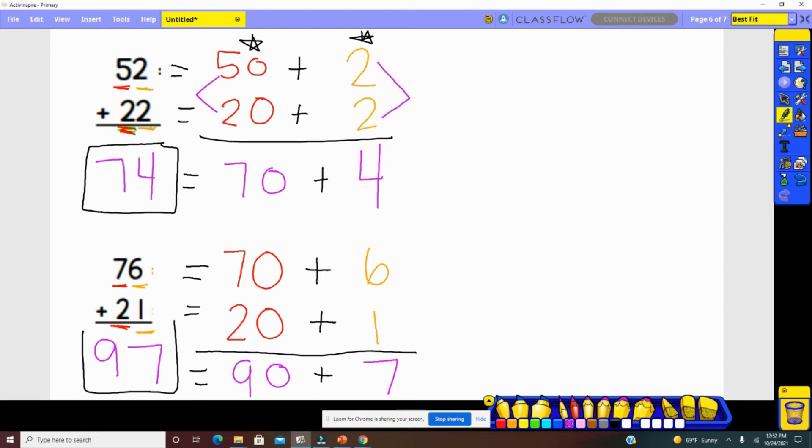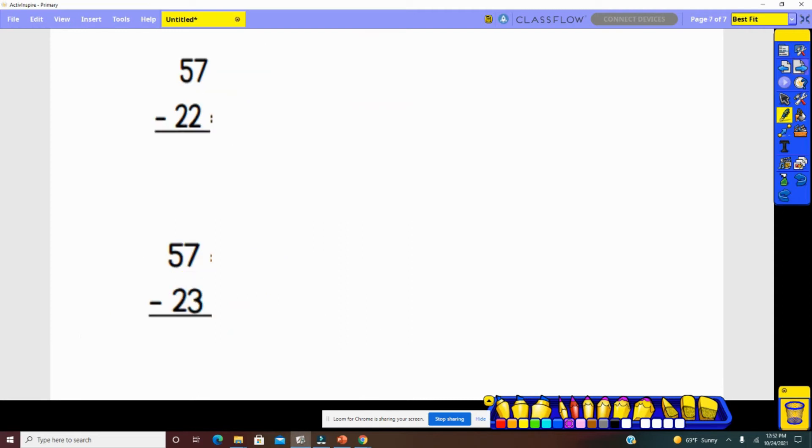Let's now look closely at using expanded form to subtract. We have 57 minus 22. Using expanded form, we will look at our tens and our ones. Separate 57 into expanded form.